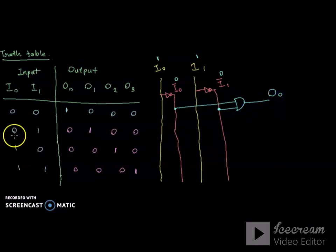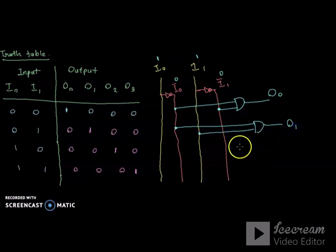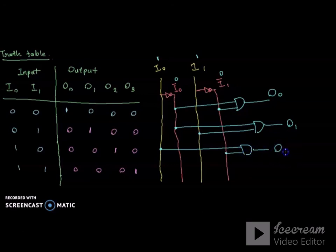Next: I0 value 0 means we get output 0 from that line; I1 value 1 means we get output 1. When I0 is 1 and I1 is 0, this corresponds to o2.